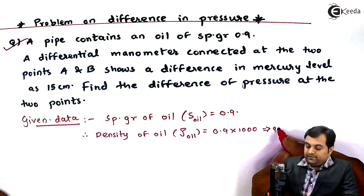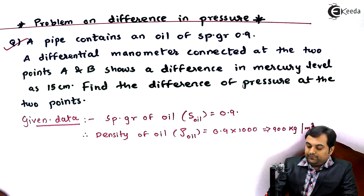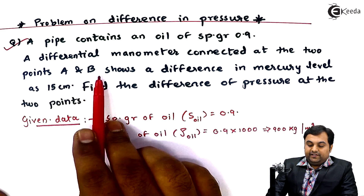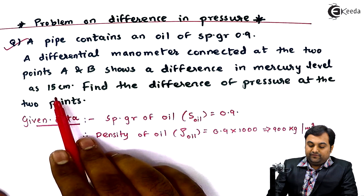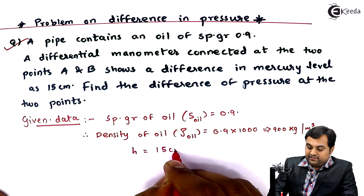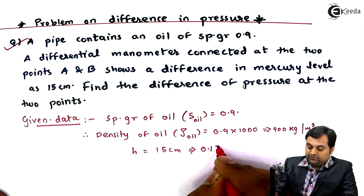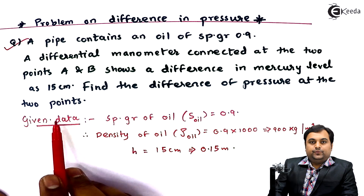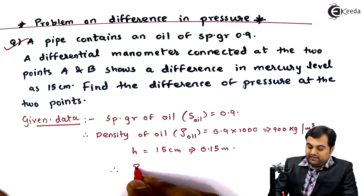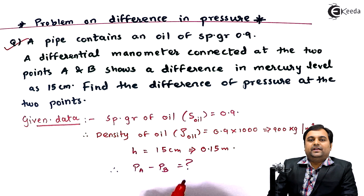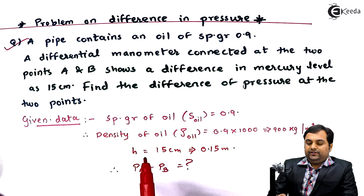Therefore, density of oil is 900 kg per meter cube. The differential manometer shows a difference in mercury level H equal to 15 centimeters, which is 0.15 meters. We need to find the difference of pressure, written as PA minus PB, where PA indicates the pressure in pipeline A and PB indicates pressure in pipeline B.